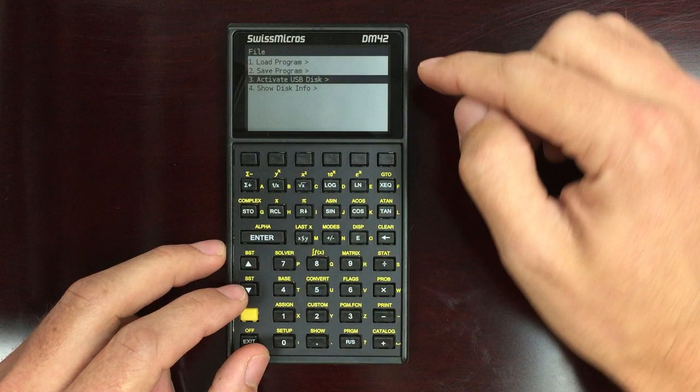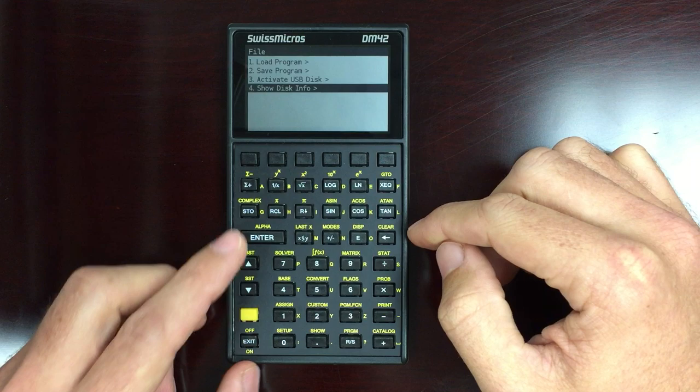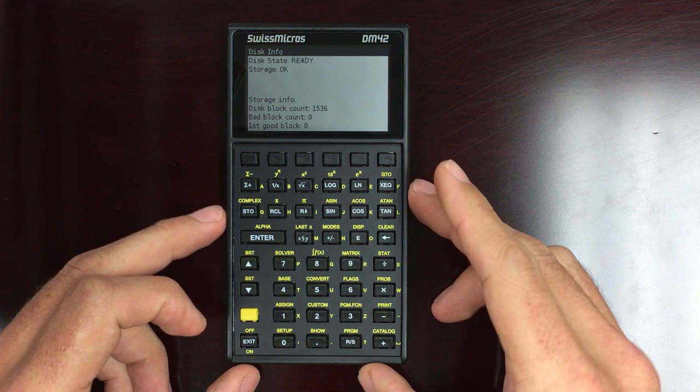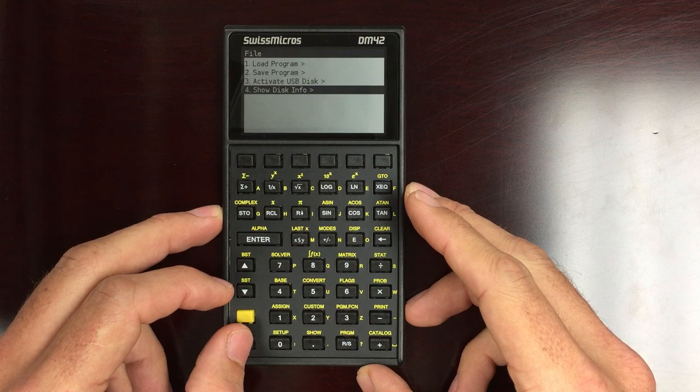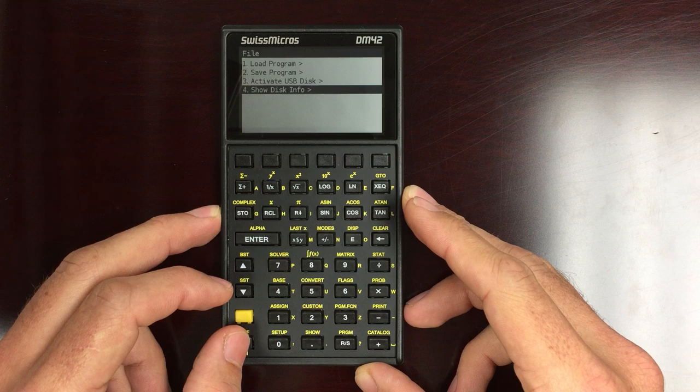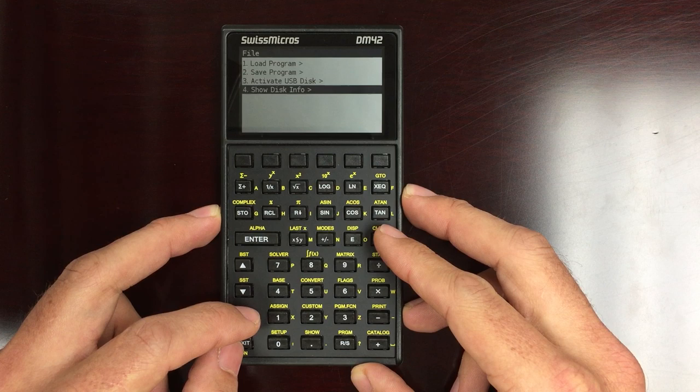So I can load programs, I can save programs. In order to connect to the computer, I just activate the USB disk. Storage, way more storage than the original. I'm not sure how to interpret block count here, but the amount of memory on this thing, I don't remember off the top of my head, you'll have to look at the specs on the website, but it is way above and beyond what the original 42 had. So no longer will memory be an issue for all your programs. Load programs to your heart's content.